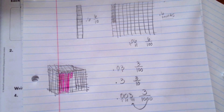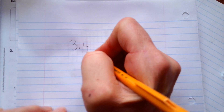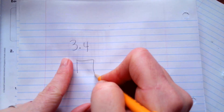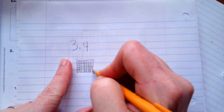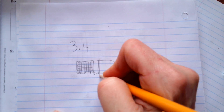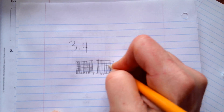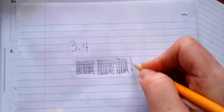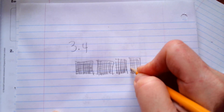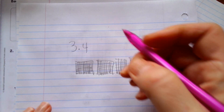Does that make a little more sense? Okay. Now let me explain to you what this means. Pretend like this is 100. These are all 100s. So this means three wholes. That's what this is — we have 1, 2, and 3.